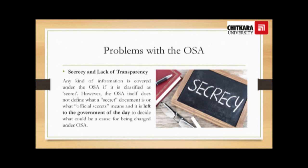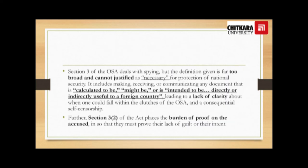Any kind of information is covered under the OSA if it is classified as a secret. However, the OSA itself does not define what a secret document is or what official secrets mean, and it is left to the government of the day to decide what could be a cause for being charged under the Official Secrets Act. Section 3 of the OSA deals with spying, but the definition given is broad and cannot be justified as necessary for protection of national security. It includes making, receiving, or communicating any document that is calculated to be, might be, or is intended to be directly or indirectly useful to a foreign country, leading to a lack of clarity and consequential self-censorship. Further, Section 3 places a burden of proof on the accused, so that they must prove their lack of guilt or their intent.